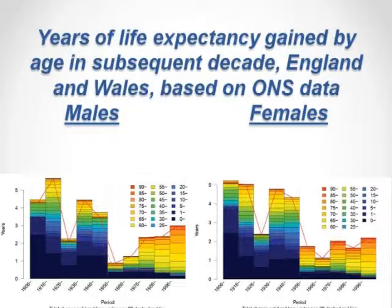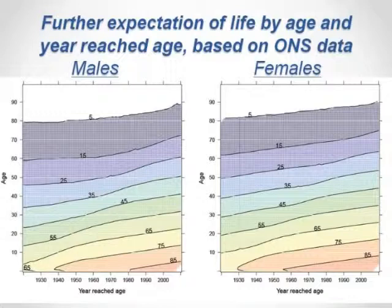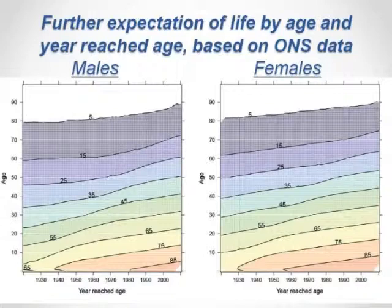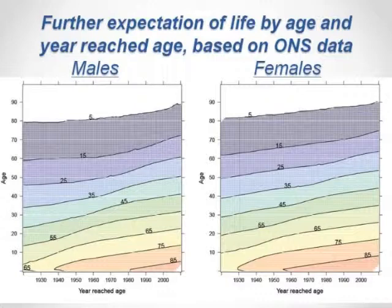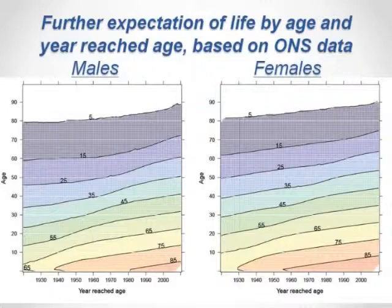How do these improvements translate into the experience of people? This shows the further number of years of life a person can expect to live at any given age, by the year at which they reached that age. For example, in 1920 a man aged 60 could expect to live for about a further 15 years. By 2010, that man could expect to live for about 25 years — an additional 10 years. Indeed, he would have to be considerably over 70, about 72, before life expectancy was once more 15 years.